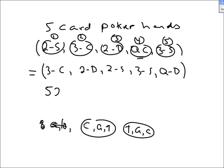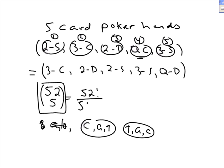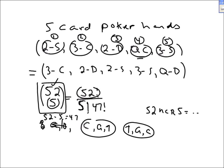There are 52 cards in a deck, and we want to choose five of them. This is our answer — this is the number of five-card poker hands. Using a calculator, you type in 52, hit the nCr button, then type in 5. The formula is 52 factorial on top, divided by 5 factorial on the bottom times 47 factorial, since 52 minus 5 is 47.